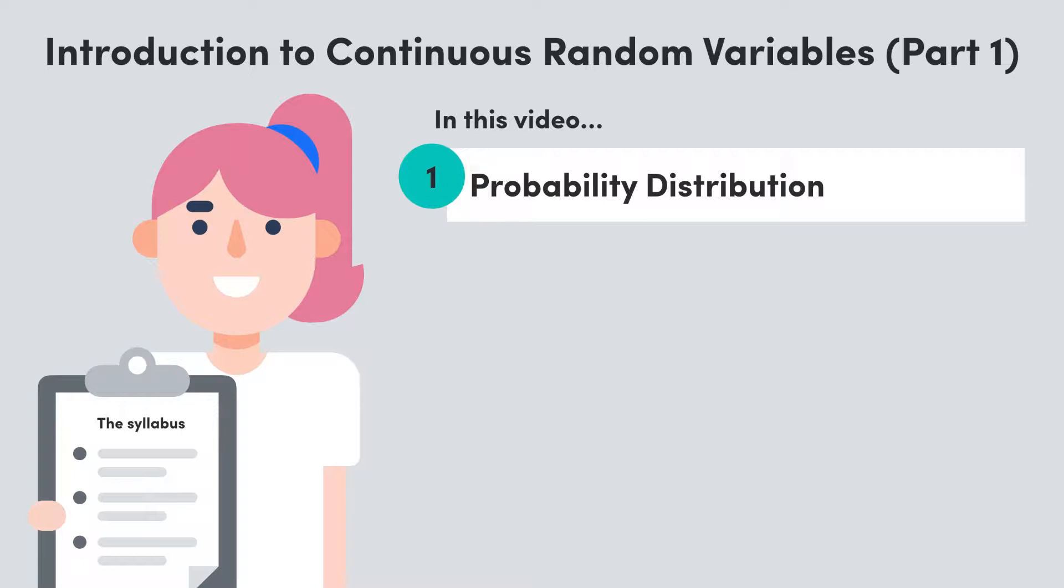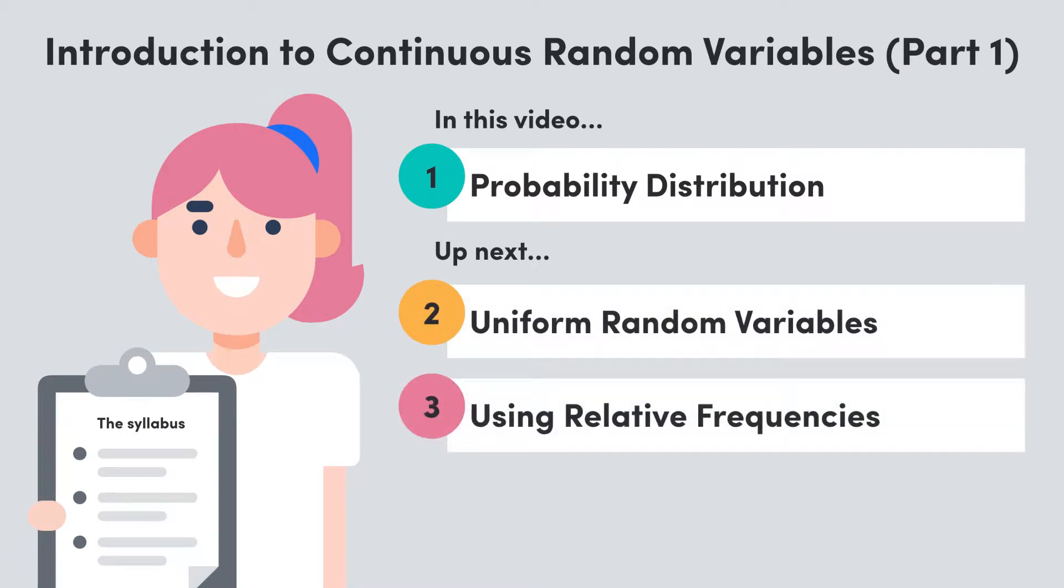Then we'll take a break, and when we come back, we'll look at a famous type of continuous random variable, a uniform random variable, before looking at how we're able to estimate the probabilities associated with continuous random variables. After that, we'll wrap up with a summary. Sound good? Let's get into it.